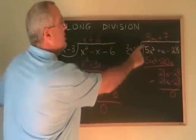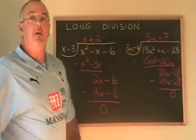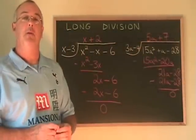The answer to the division is 5a plus 7. Now you know how to do long division with polynomials.